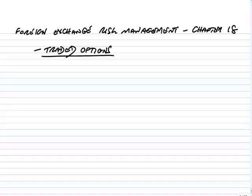In the previous lecture, we talked about over-the-counter options. Here, with traded options, the idea is essentially the same in that you have a fixed exchange rate, but it's our choice whether to use it or not. Options are also traded on the foreign exchanges.